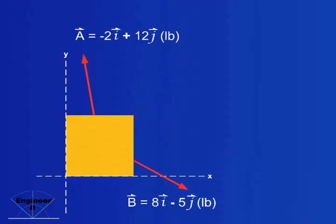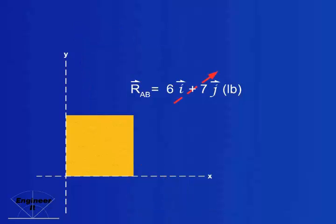Let's try vector notation. Two forces applied to this body reduces to a resultant force by summing the x and y components. Again, the resultant force replaces forces A and B.